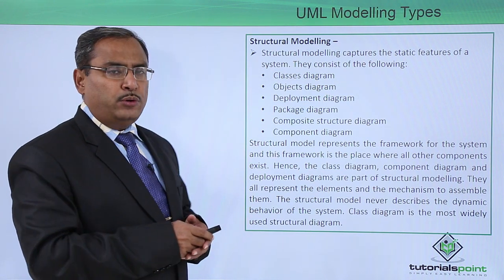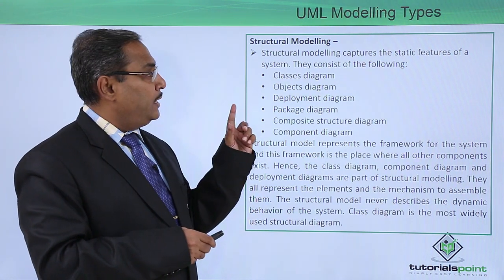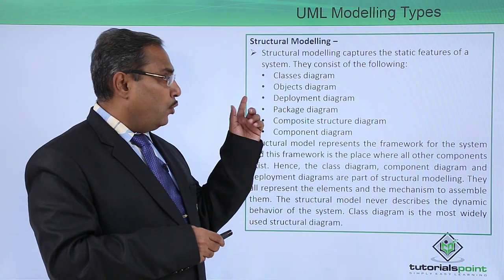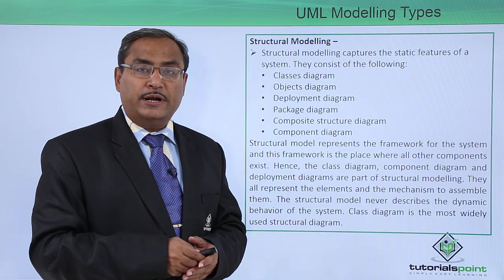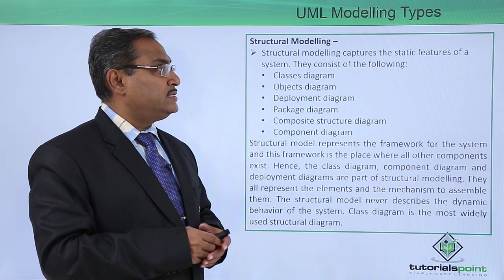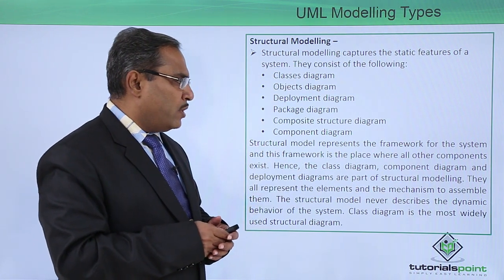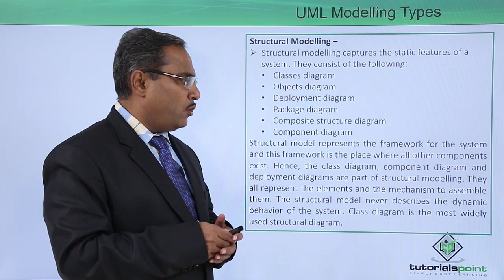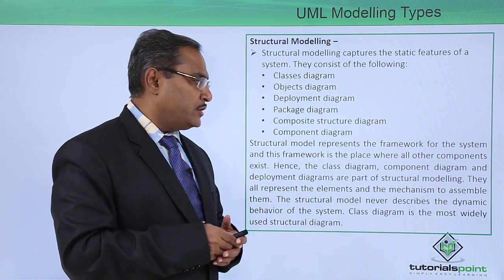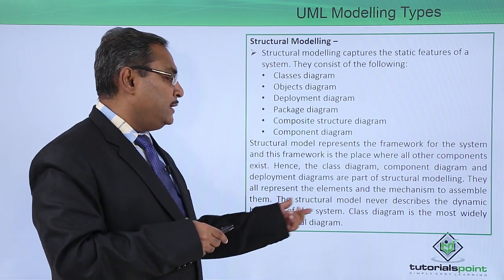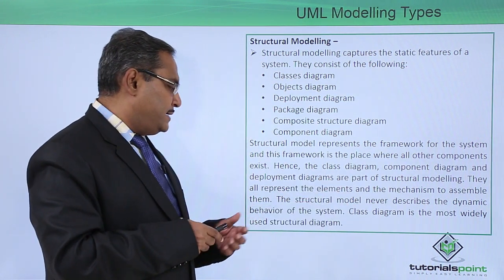Structural modeling captures the static features of a system. It consists of the class diagram, object diagram, deployment diagram, package diagram, composite structure diagram, and component diagram. The structural model represents the framework for the system, and this framework is the place where all other components exist. Class diagram, component diagram, and deployment diagrams are part of structural modeling and represent the elements and the mechanism to assemble them.